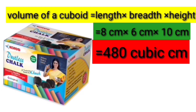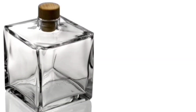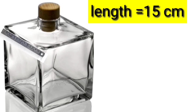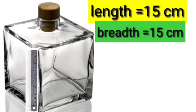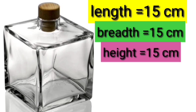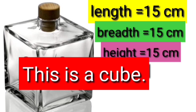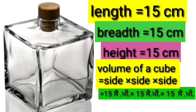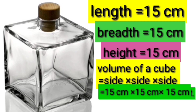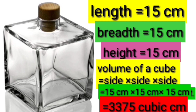Moving on to the next question, we have a glass bottle. We have to find out its volume. Its length is 15 cm, its breadth is 15 cm, and its height is also 15 cm. Since all three dimensions are the same, this is a cube. The volume of a cube is side into side into side, that is 15 cm into 15 cm into 15 cm. So the volume of this bottle is 3375 cubic cm.